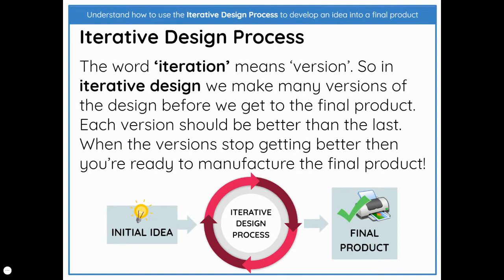The word iteration means version. So in iterative design, we make many versions of the design before we get to the final product. Each version should be better than the last. When the versions stop getting better, then you're ready to manufacture the final product.